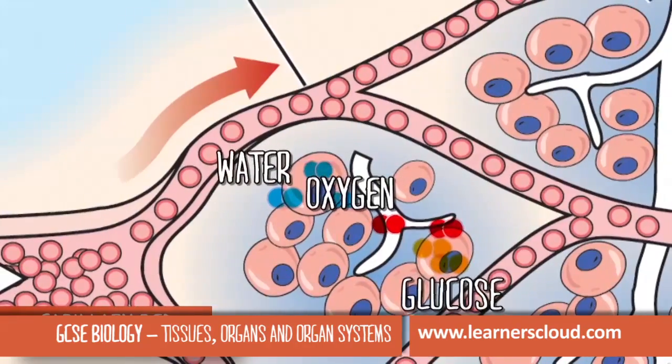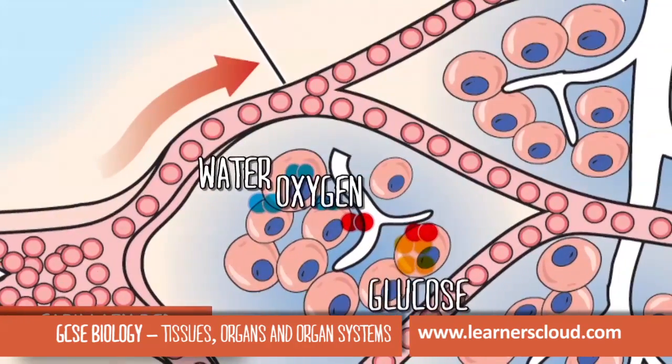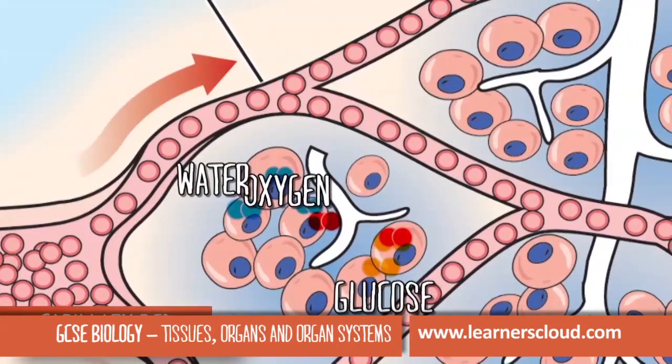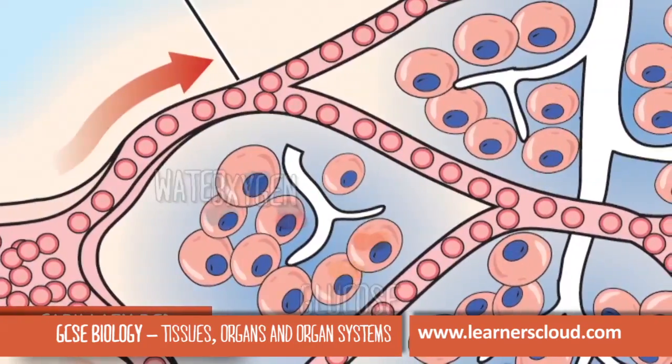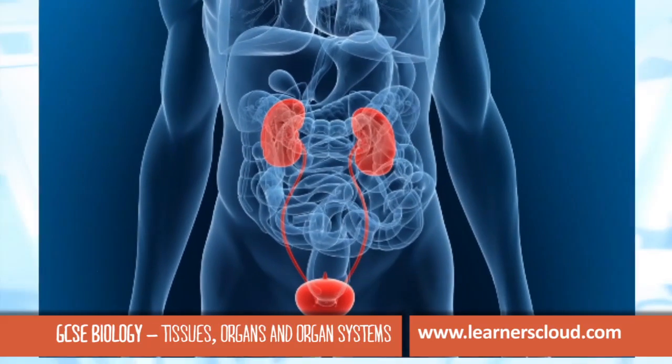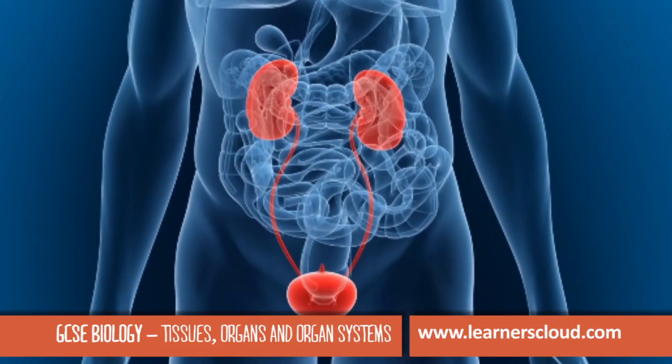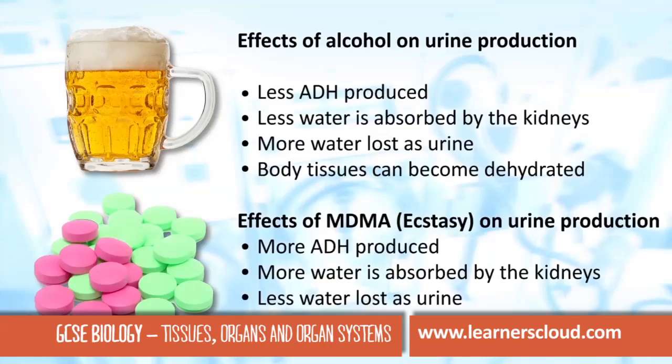Useful substances like these can then diffuse into the cells. Kidneys are responsible for regulating the water content of our bodies.